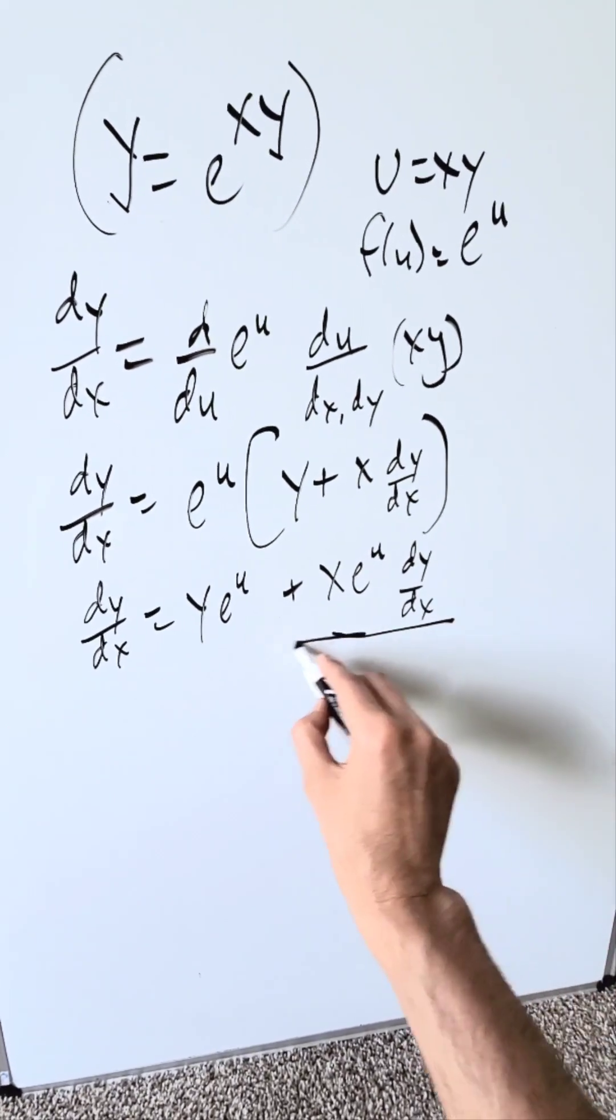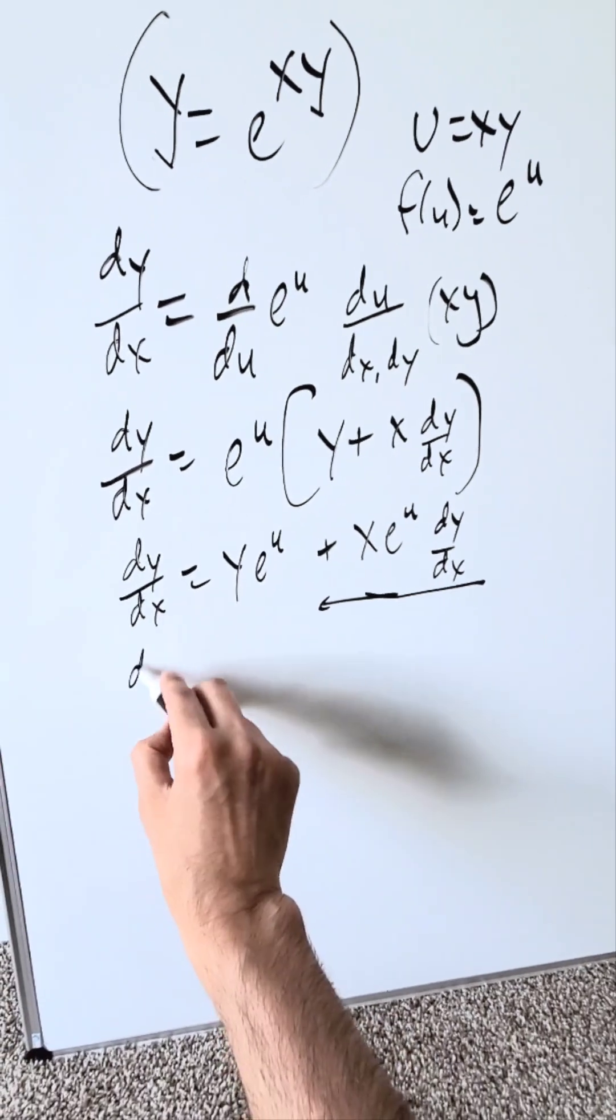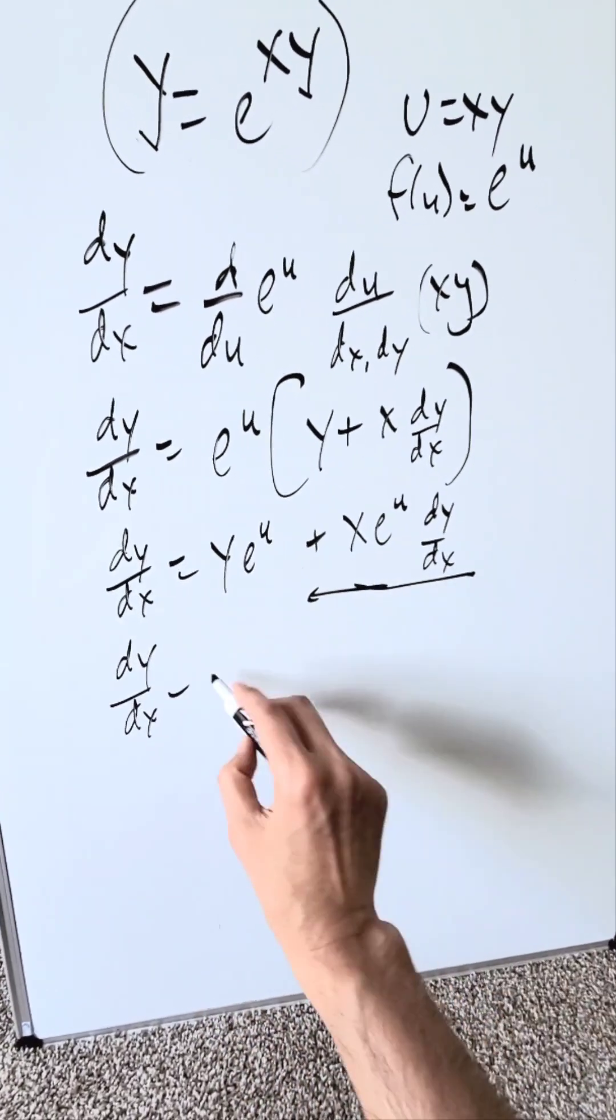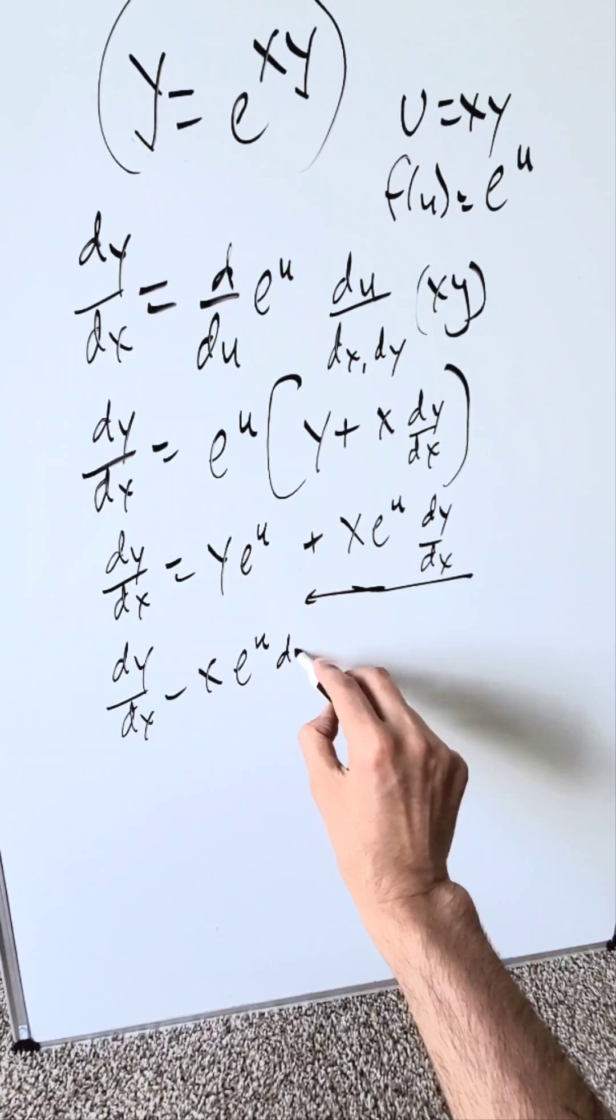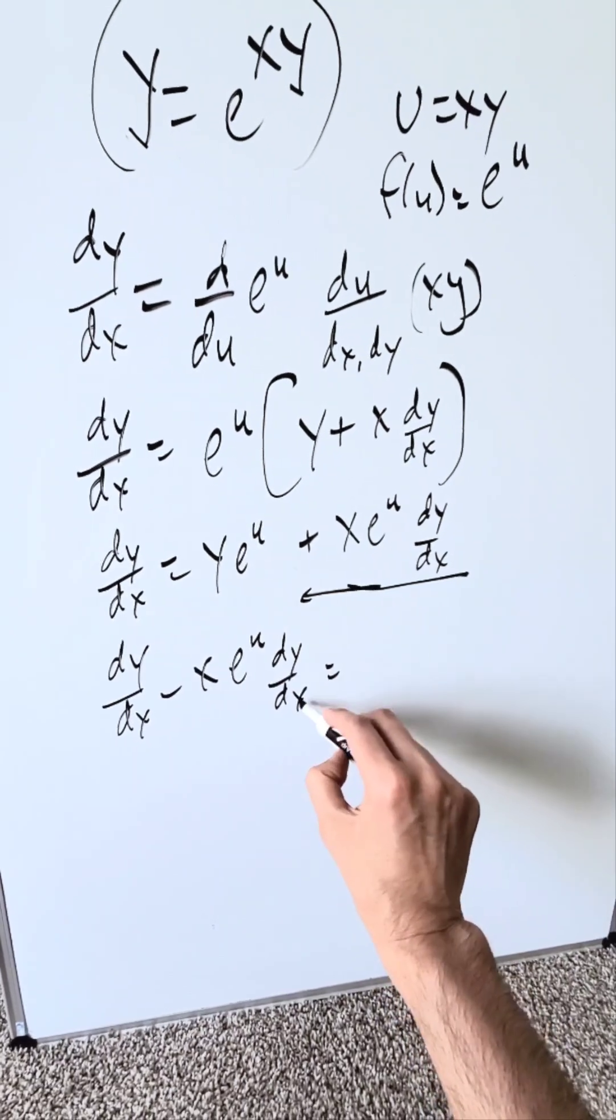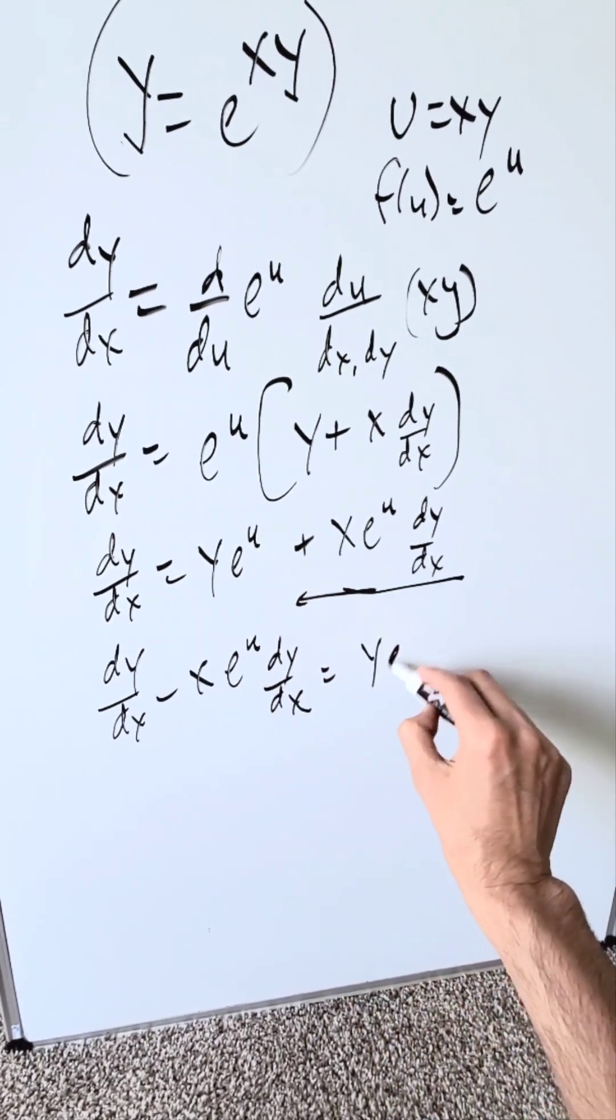This term right here I'm going to push it onto the other side of the equal sign. I have dy/dx minus this term, x times e to the u times dy/dx, is equal to this item right here, y times e to the u.